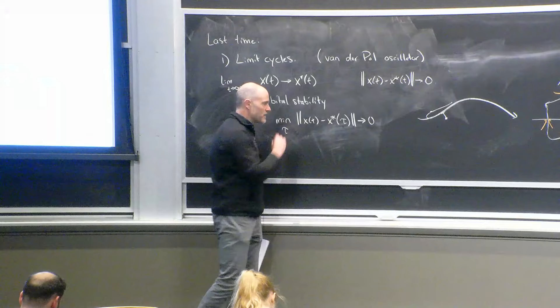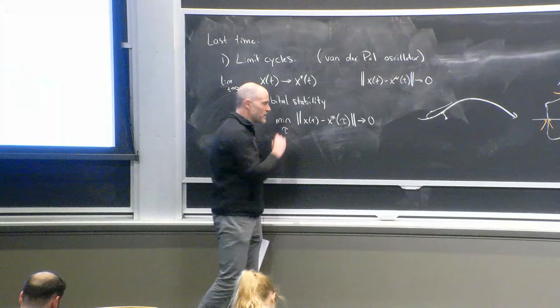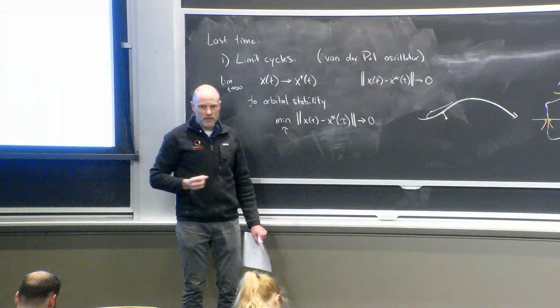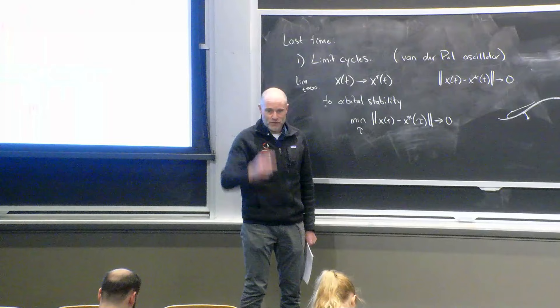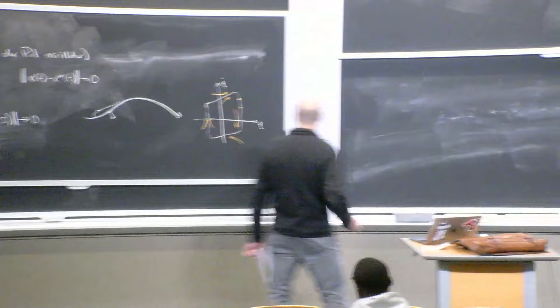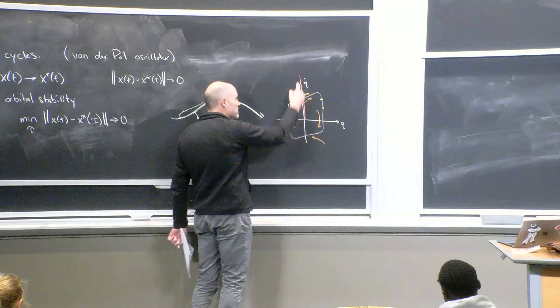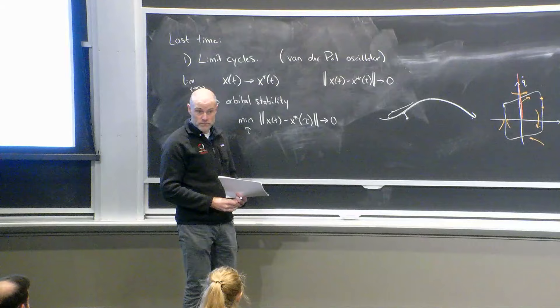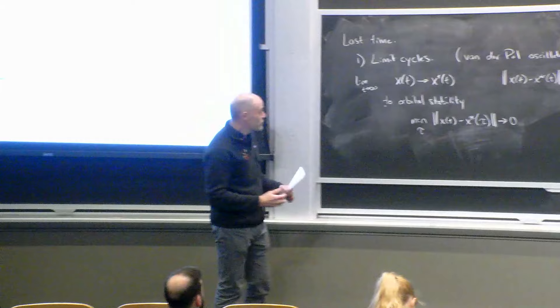How do we work with orbital stability in practice? It seems like a very difficult object, but the Poincaré map — a very simple operation if you can define it — gives us this type of stability. If you only examine the system at a surface of section, it abstracts time, and stability on the Poincaré map infers orbital stability on the trajectory. That's the amazing Poincaré-Bendixson result.